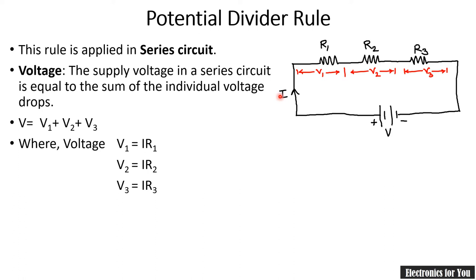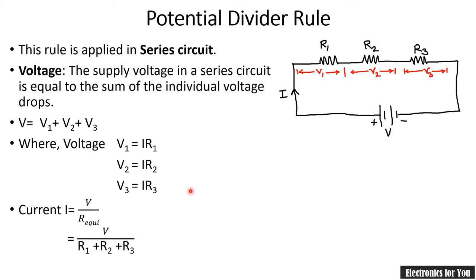Now, the current I is equal to voltage divided by the total resistance of the circuit. We call this the equivalent resistance, so current I equals V upon R-equivalent. In a series circuit, R-equivalent is the sum of all resistances connected in series. Therefore I equals V upon R1 plus R2 plus R3, where R1, R2, and R3 are the three resistances in series.